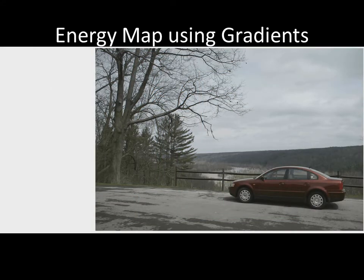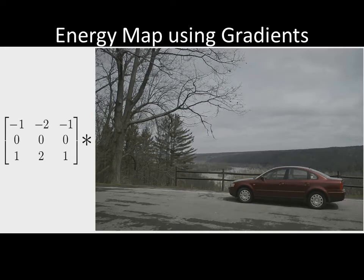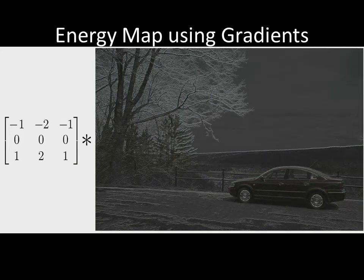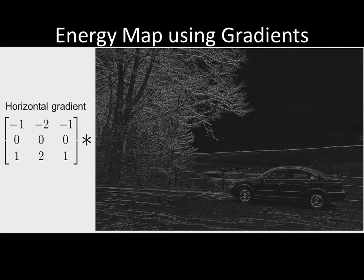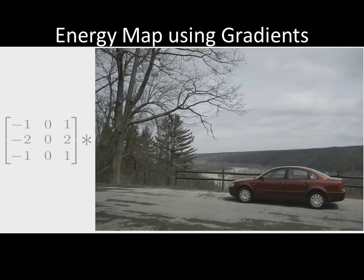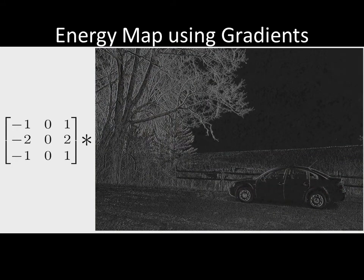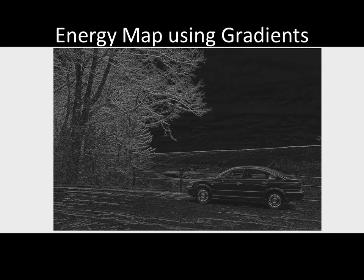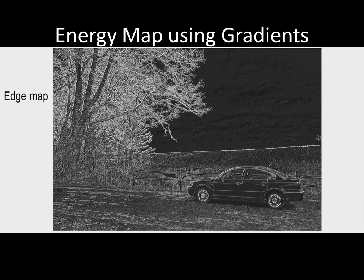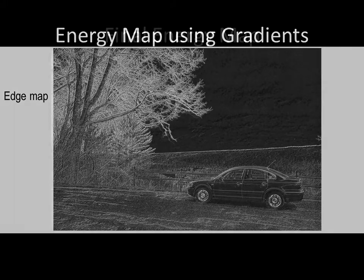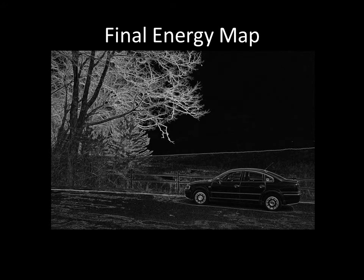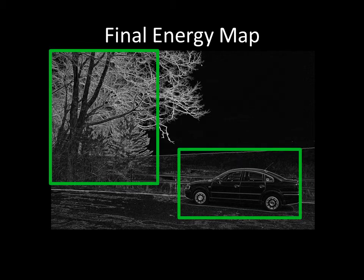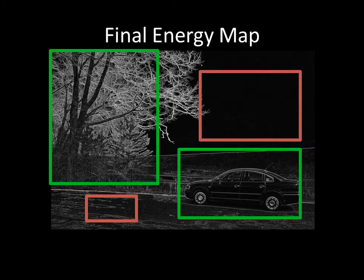One way to find the energy map is to use the gradients. This is simply the Sobel filter convolved with the image, first in the horizontal direction, where you find the edges horizontally, and then computed in the vertical direction. These two images are then combined — the horizontal and vertical gradients — to give you the edge map, which is your energy image. In the final energy map, you can see that on the tree and on the car there are a lot of edges, but on the areas that we don't care about, there aren't really many edges.